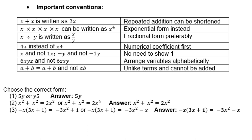Instead of x4, we prefer to write the number before the letter: 4x and not 1x. We have no need to show the 1. 6xyz — we don't write 6zxy; we prefer to arrange it alphabetically. a plus b is equal to a plus b and not ab, because they are unlike terms and you cannot add them.